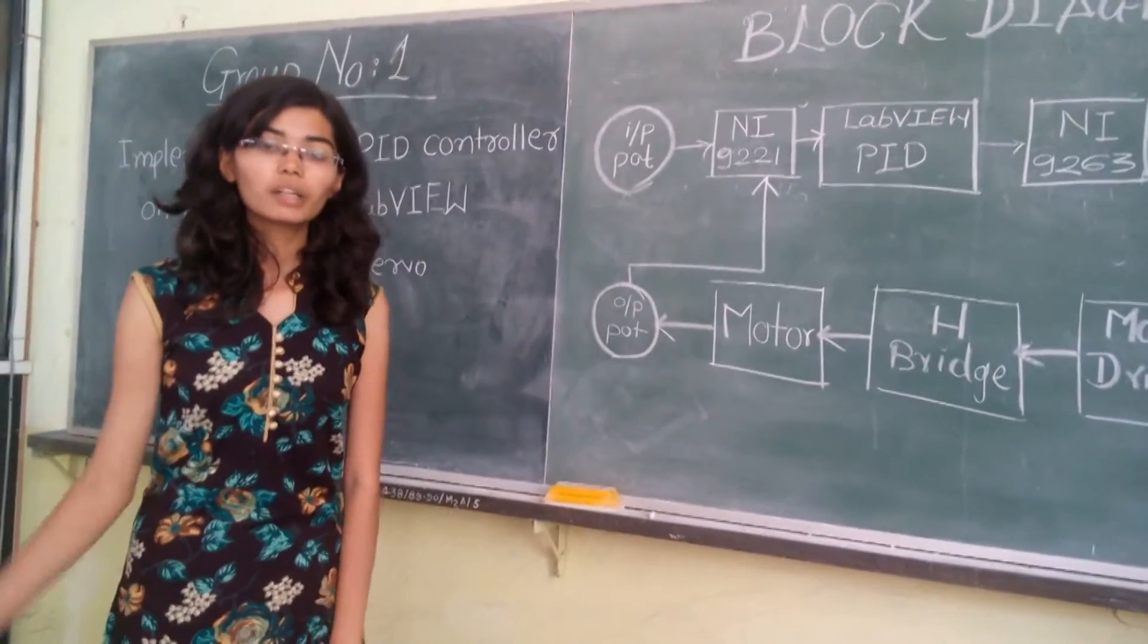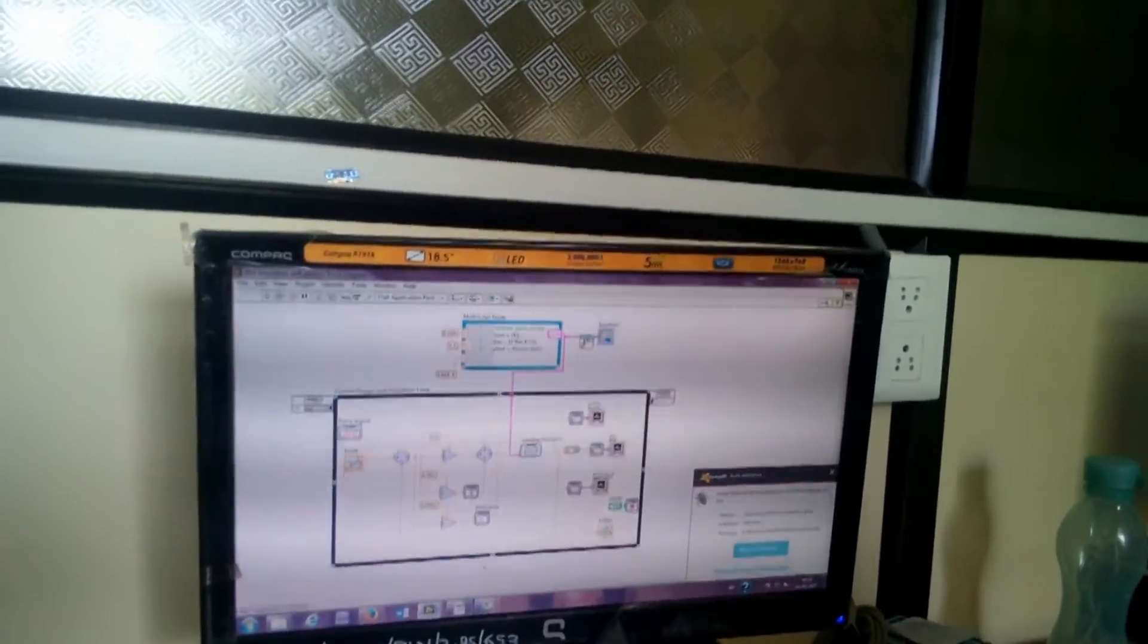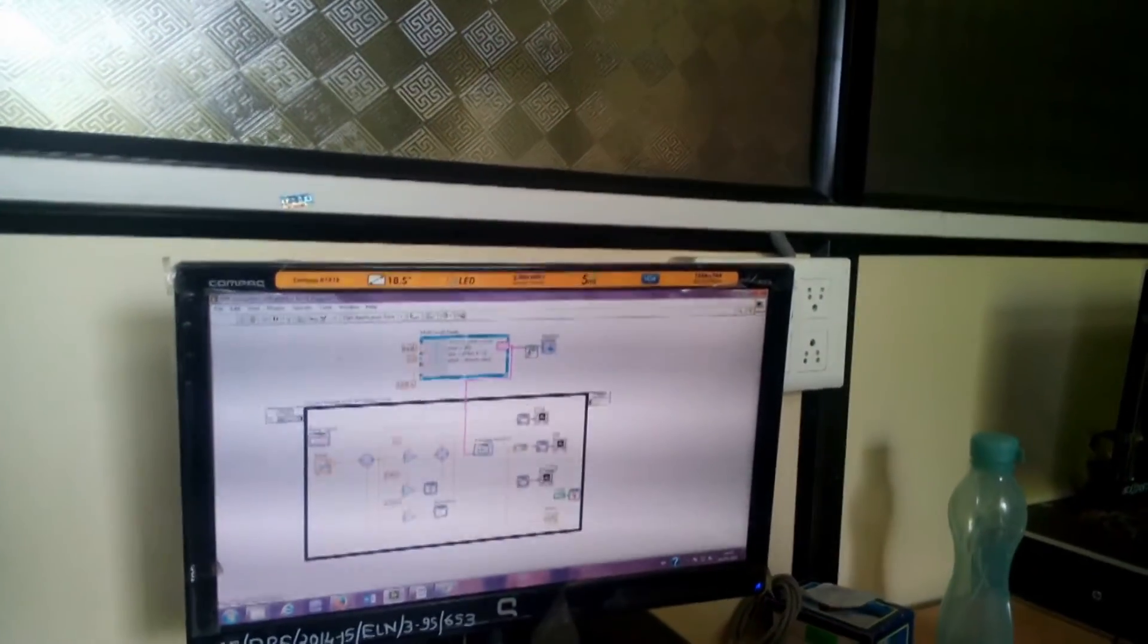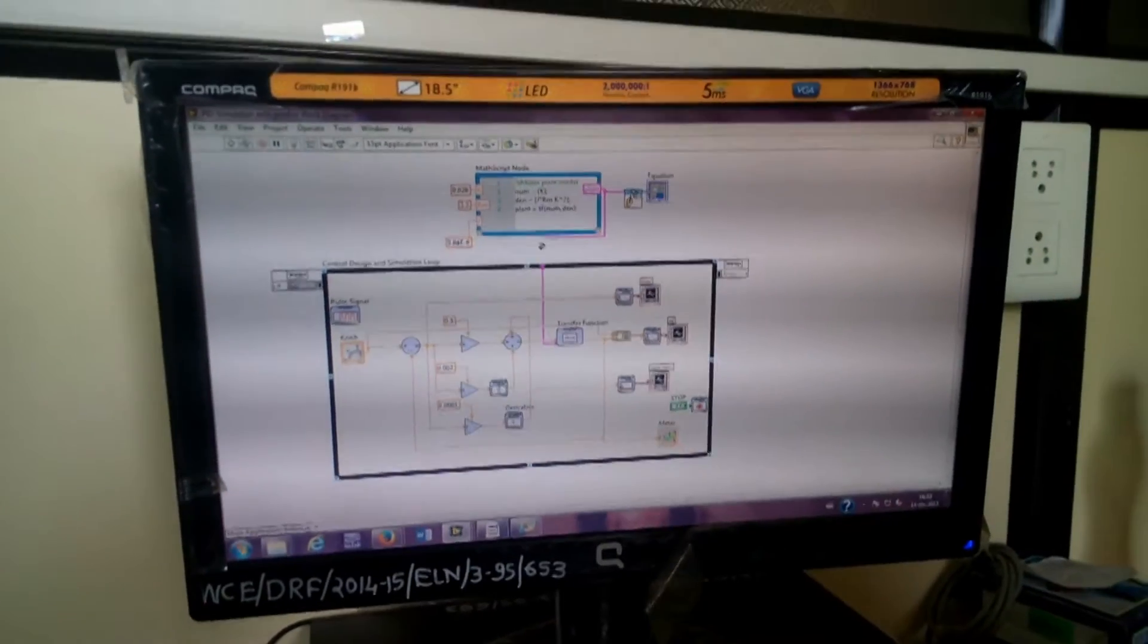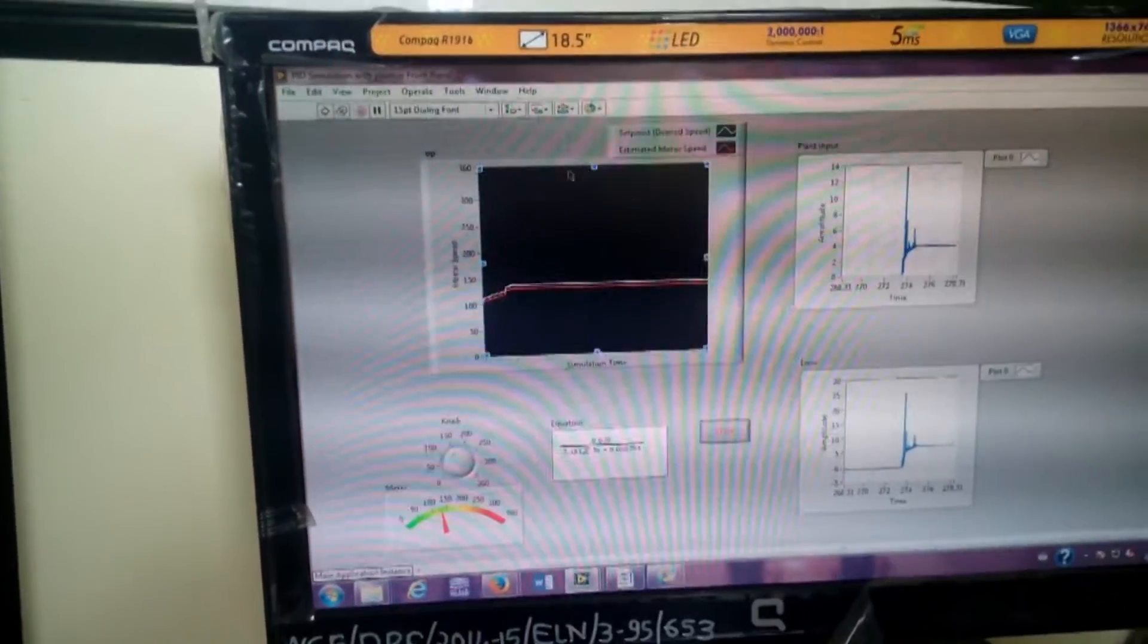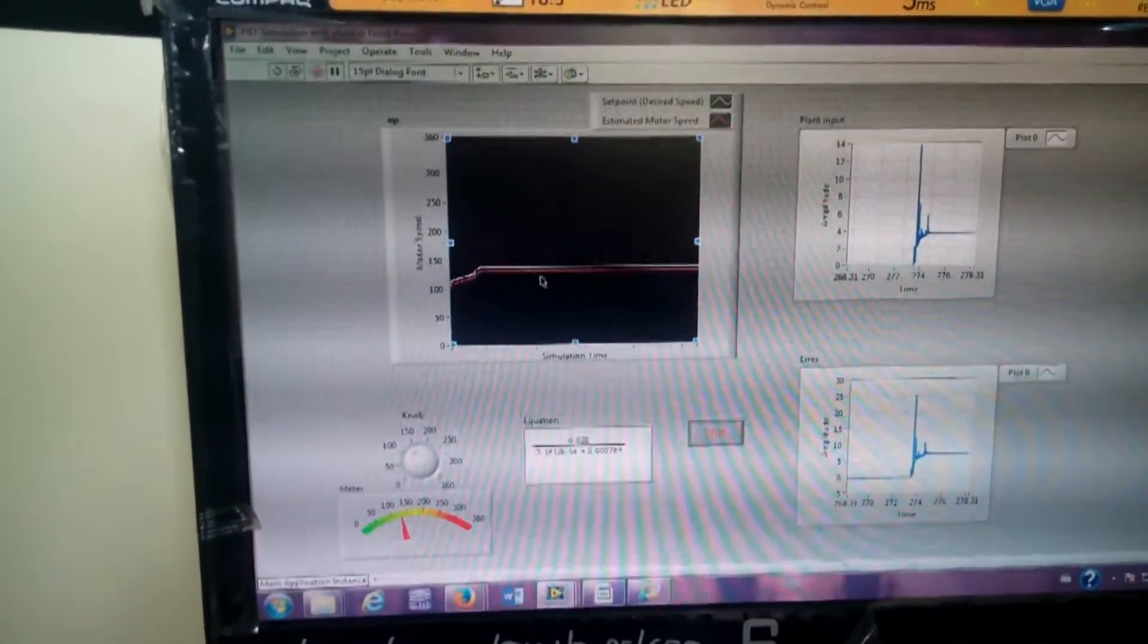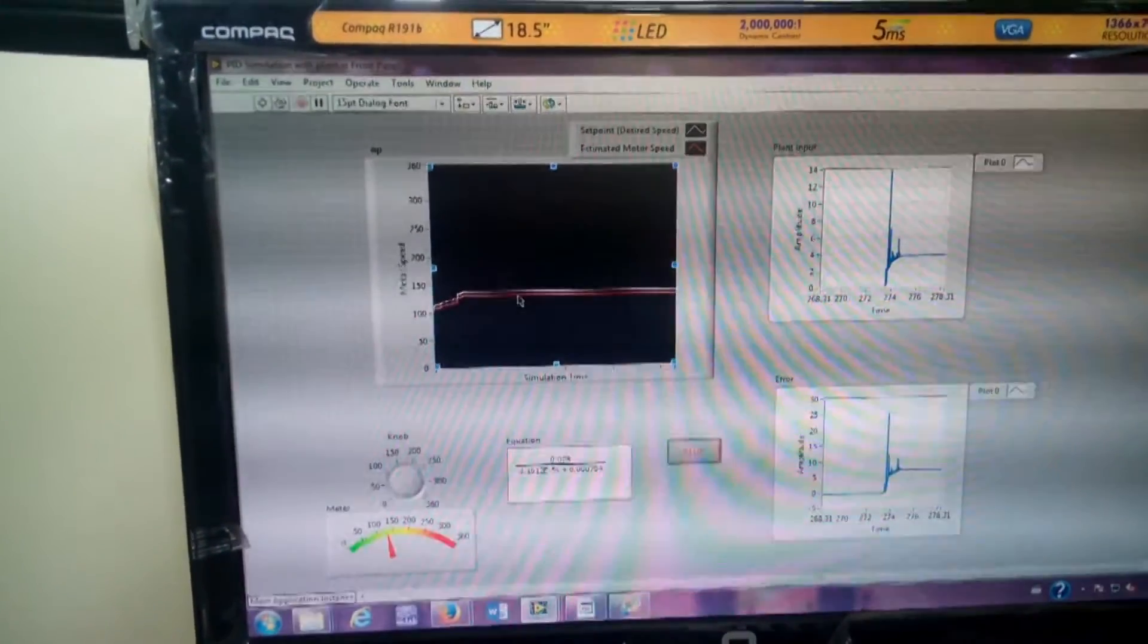Now the simulation of the PI will be shown. This is the front panel and this is the block panel. Now here the block diagram of the PI is shown. Here the transfer function of motor is inserted in the Mathscript node. And after simulating this we get such type of graph in the front panel where the red color graph shows the estimated motor speed and the white color graph shows the set point. The difference between set point and the estimated motor speed gives us the error and it minimizes according to time.